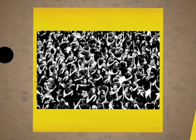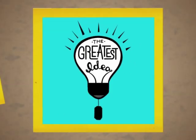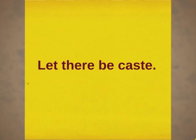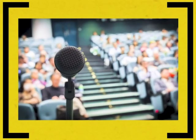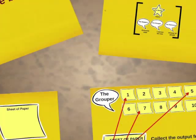How would you avoid the chaos of so many people working together? How will you coordinate since the output of one has to be merged with another? You decide to take leave for the day, go home, sleep it over, and the next day wake up with the greatest idea ever. The next day, you stand with a mic on the dais before the 50,000 employees and proclaim that for a week, they will all be divided into three groups: the mappers — tens of thousands of people; the grouper — just one person for now; the reducers — around ten of them; and the master — that's you.